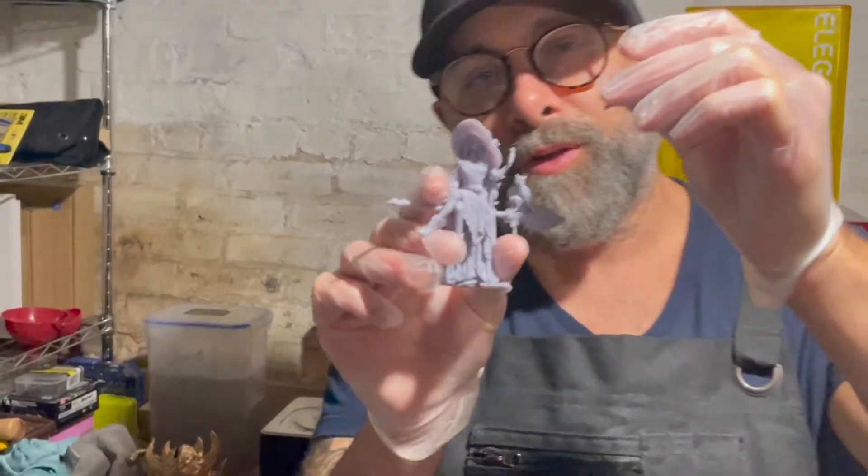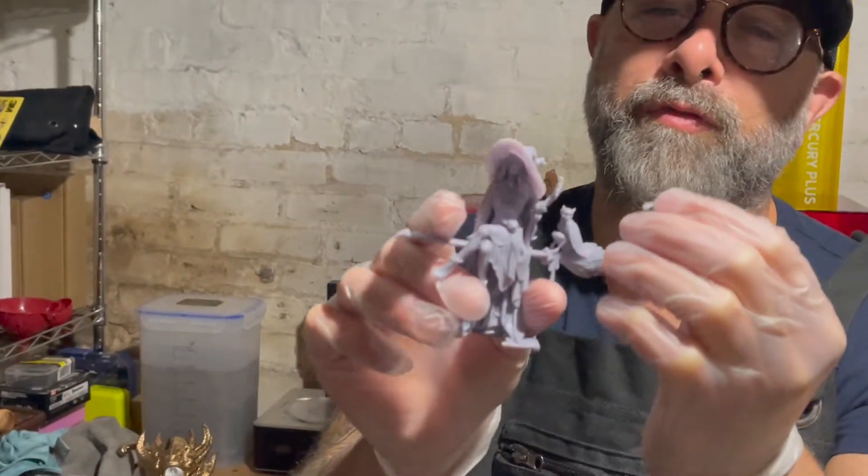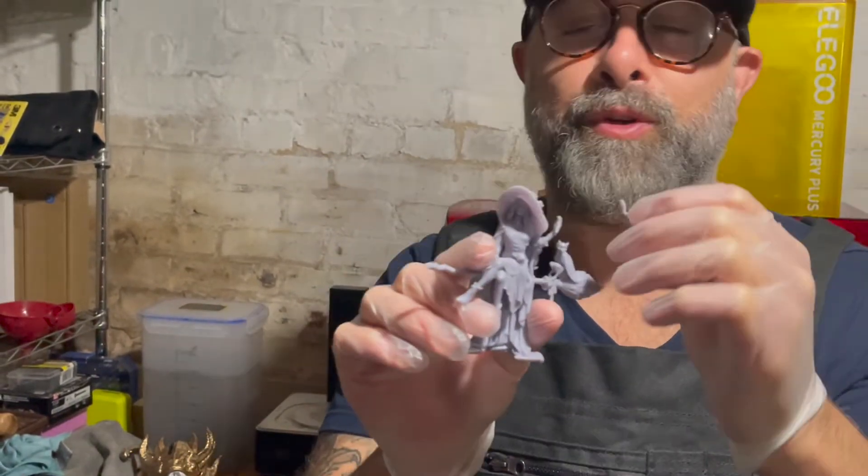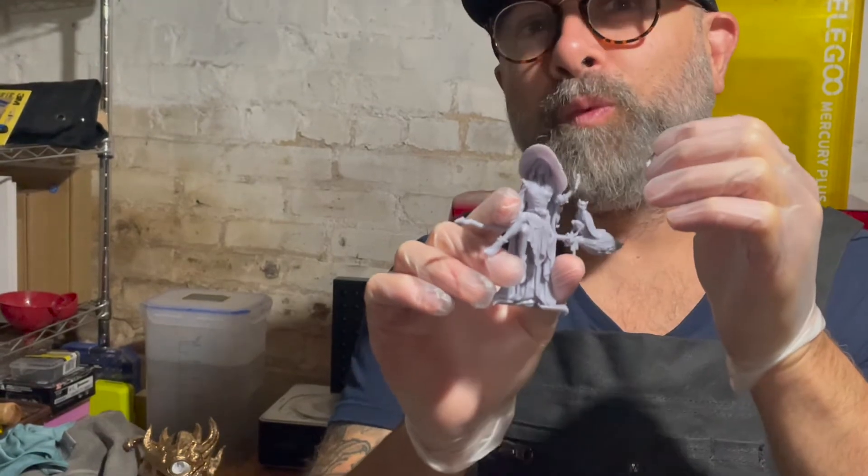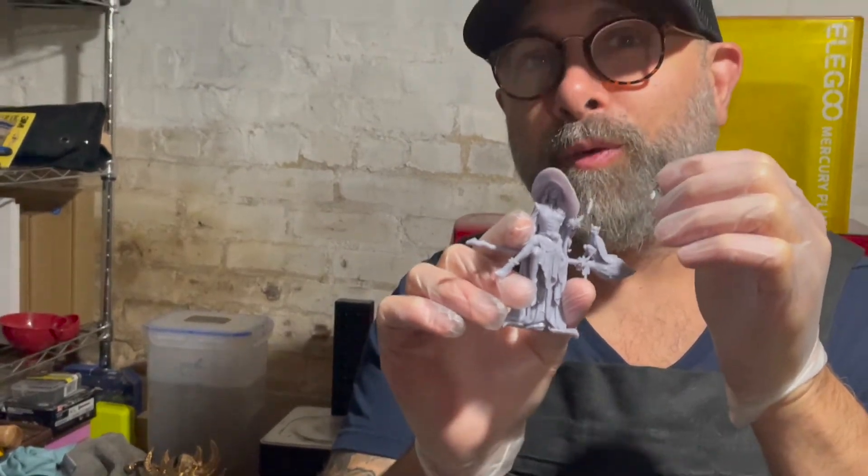So we see here with our little Halloween witch, we broke off part of our wand. Now, we actually tried super gluing this. It didn't work really well. But here's a technique that works really well on 3D resin prints.